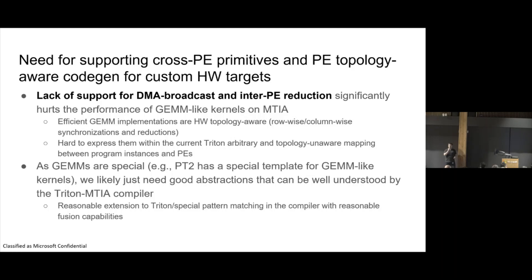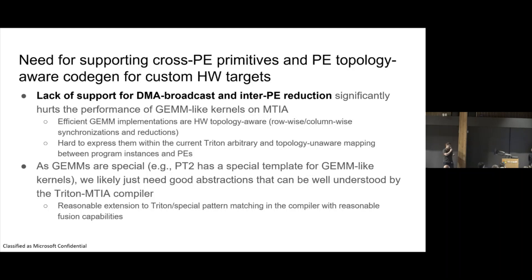Another important aspect is communication. We saw in the feasibility study results that there is a gap for fully connected layer kernels. This gap exists because these kernels, to achieve high performance, use communication between PEs. There are two patterns: one is called DMA broadcast, where PEs are combined into broadcast groups that read data from DRAM and use the network-on-chip to distribute data between PEs, saving memory bandwidth. Another pattern is when the reduction dimension is large — we often split computation along the reduction dimension, which requires PEs to communicate to compute the final result via a cross-PE reduction network.